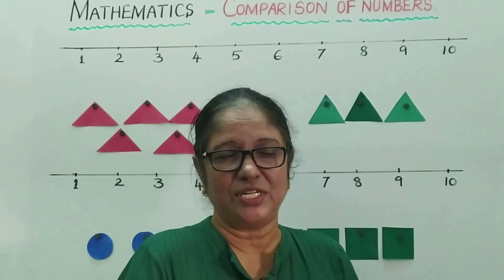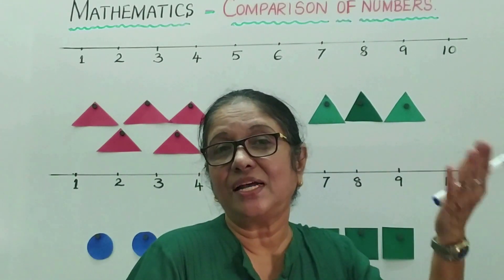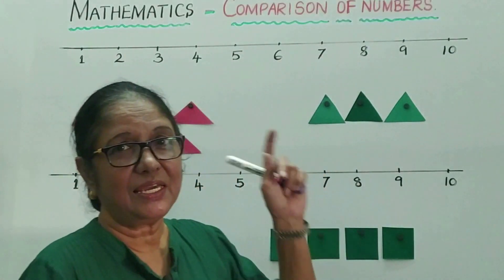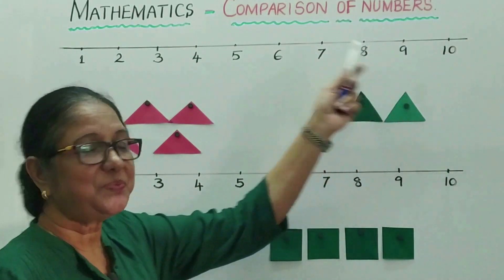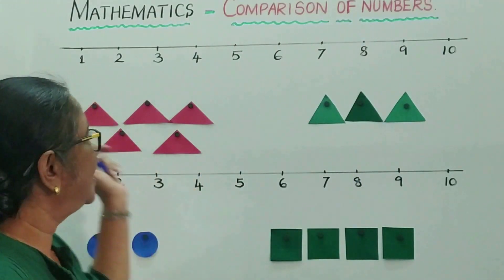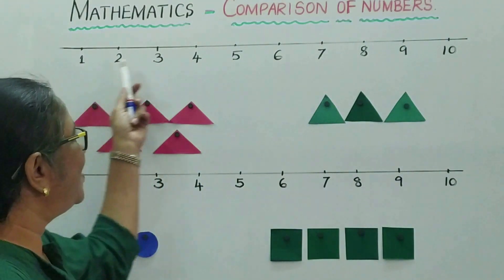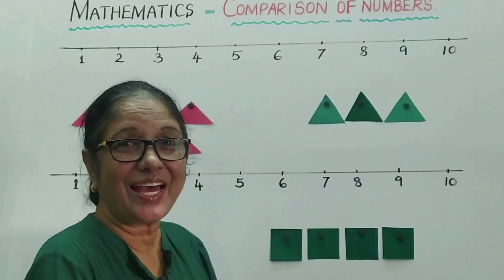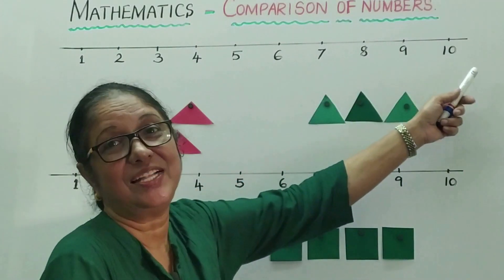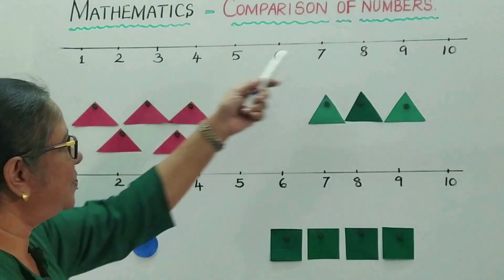Did you notice some numbers have smaller value whereas others have greater value? Here I have written numbers from 1 to 10 on a number line. From 1 to 9 is single digit, called as ones. From 10 onwards we have ones and tens.